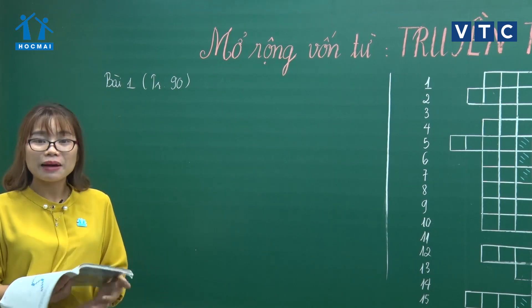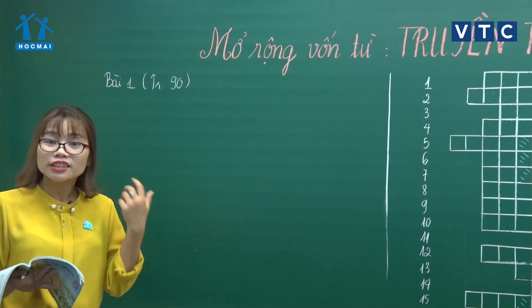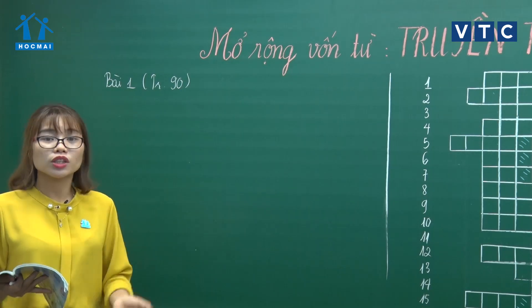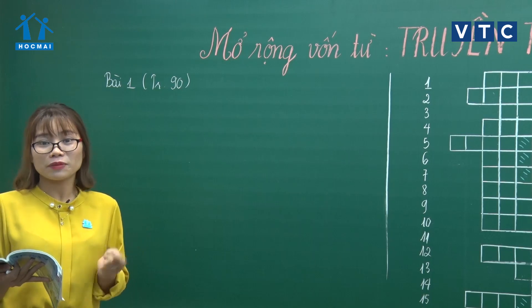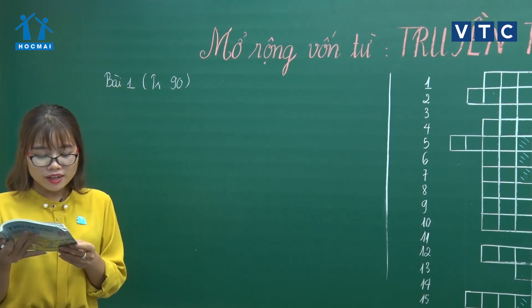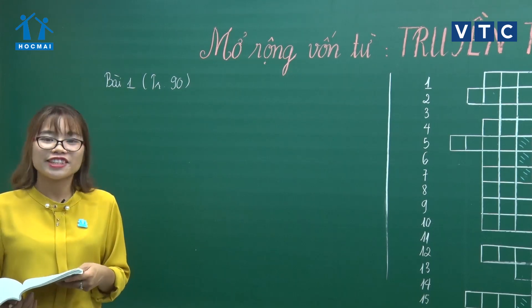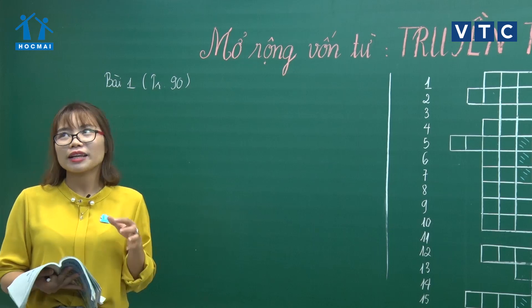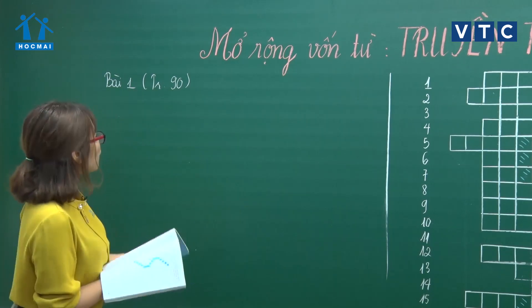Ở tuần thứ 25, cô Hoa có nhắc dân tộc Việt Nam có rất nhiều truyền thống tốt đẹp, ví dụ như truyền thống yêu nước, truyền thống thương người, truyền thống tôn sư trọng đạo. Hôm nay với bốn truyền thống: yêu nước, lao động cần cù, đoàn kết và nhân ái - các con sẽ biết thêm những câu tục ngữ ca dao liên quan.